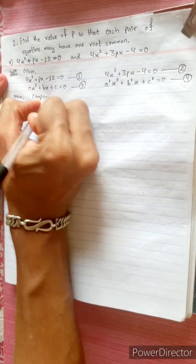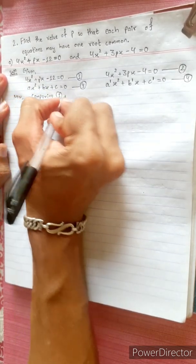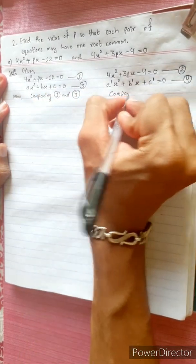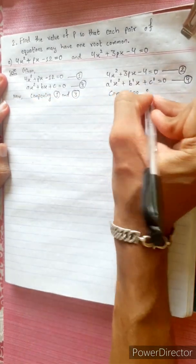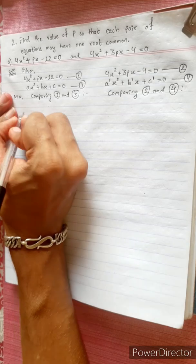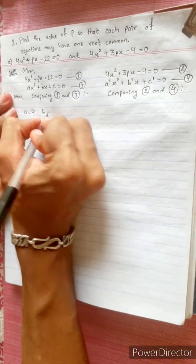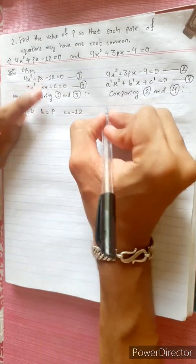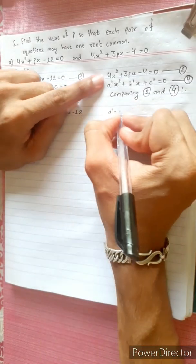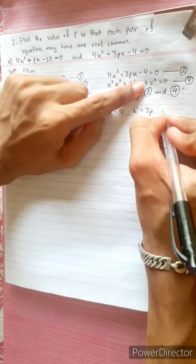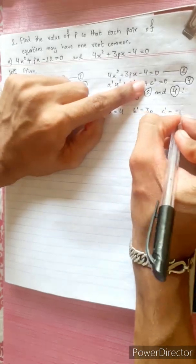Comparing equations 1 and 3, then equations 2 and 4. From equation 1: a = 4, b = p, c = -12. From equation 2: a' = 4, b' = 3p, c' = -4.